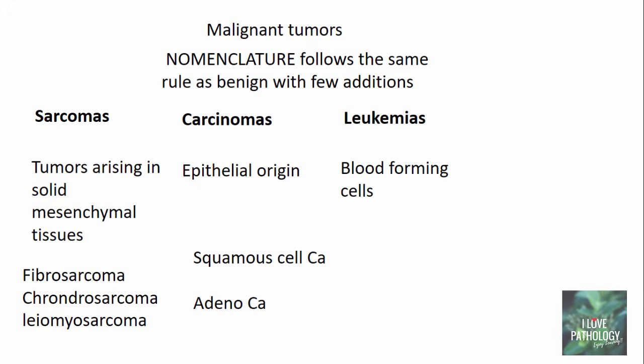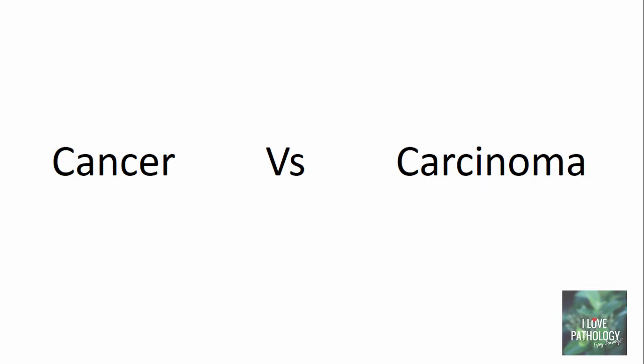Leukemias describe malignant tumors arising from blood-forming cells, and lymphomas describe malignancies arising from lymphoid cells. At this point, you need to understand the difference between cancer and carcinoma: cancer is a common term used to describe all malignant neoplasms, whether mesenchymal or epithelial, whereas carcinoma is a specific term used to describe malignancies arising from epithelial cells.